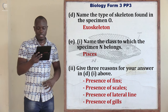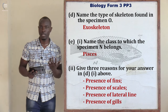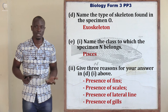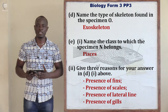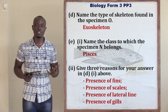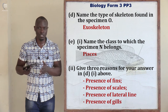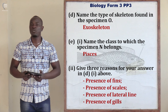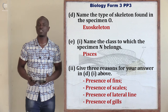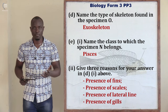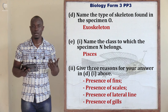Question E asks for the class to which specimen N belongs. Specimen N is a fish. Fish belong to class Pisces. The phylum to which fish belong is phylum Chordata, because fish possess a backbone and are therefore vertebrates. All vertebrates belong to phylum Chordata.